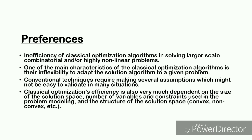Conventional techniques require making several assumptions which might not be easy to validate in many situations. Classical optimization efficiency is also very much dependent on the size of the solution space, the number of variables and constraints used in problem modeling, and the structure of the solution space — convex, non-convex, etc.